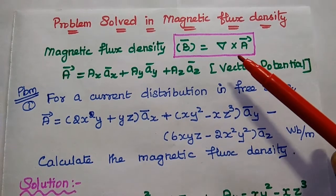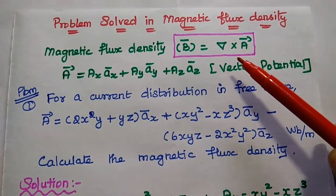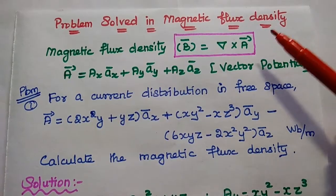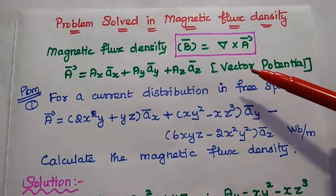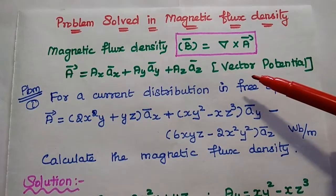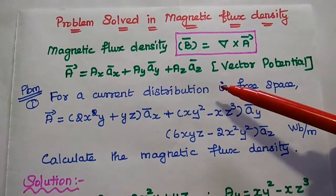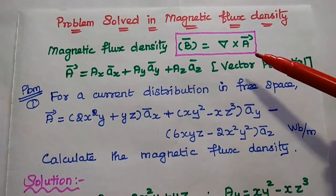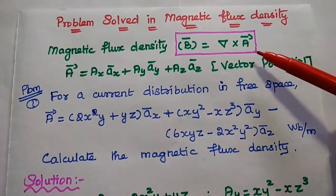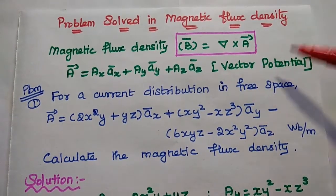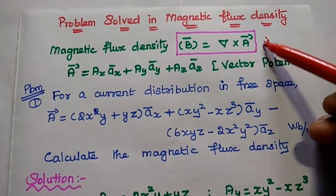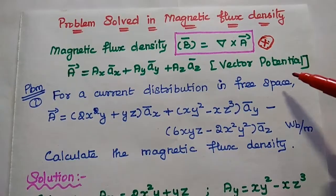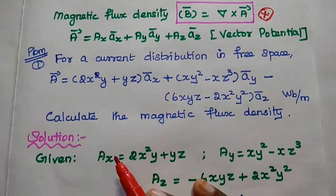Dear students, now we are going to solve important problems in magnetic flux density. We consider the magnetic vector potential A vector is given, then the magnetic flux density can be obtained by using the formula del cross A vector. This is the formula we are going to use to calculate the magnetic flux density.